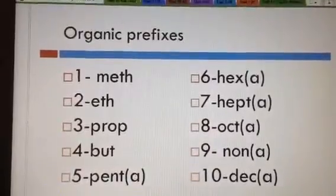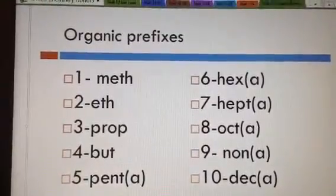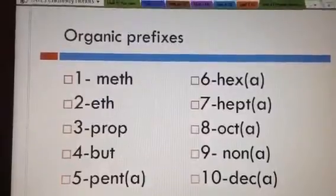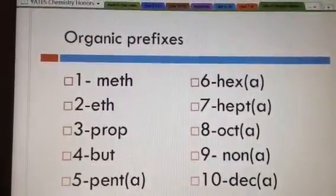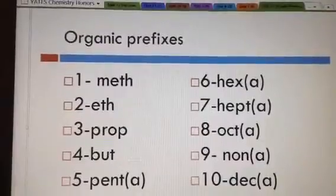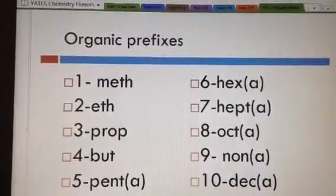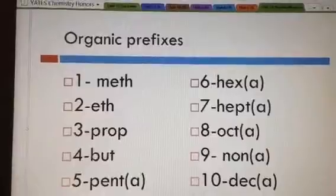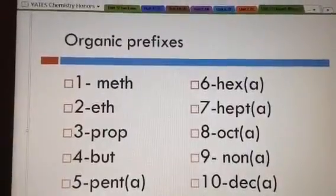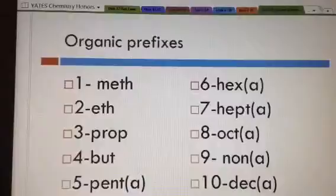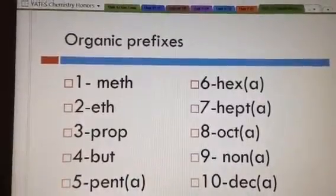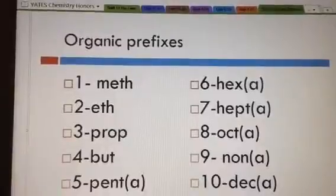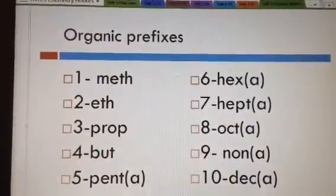So number one is meth. When you have two carbons it's eth. When you have three carbons it's prop. Four is but. Five is pent. Six is hex. Seven is hept. Eight is oct. None is number nine. And ten is dec. And that is talking about how many carbons you have in a chain.